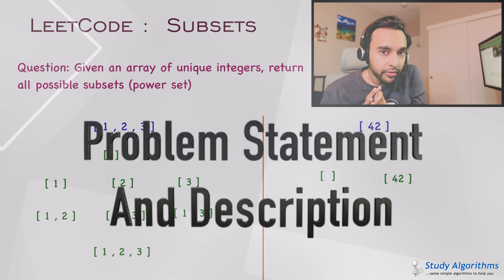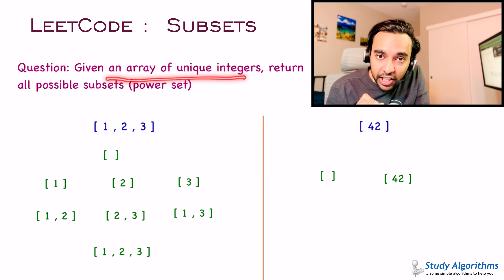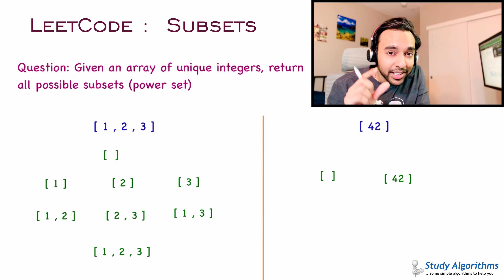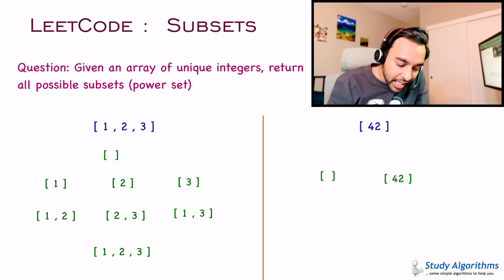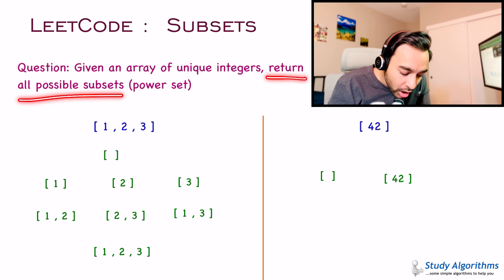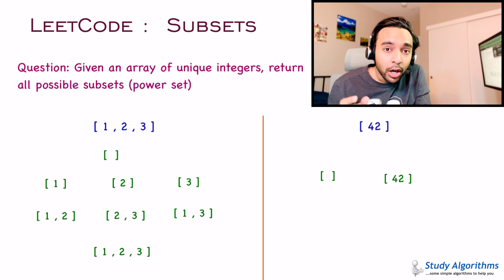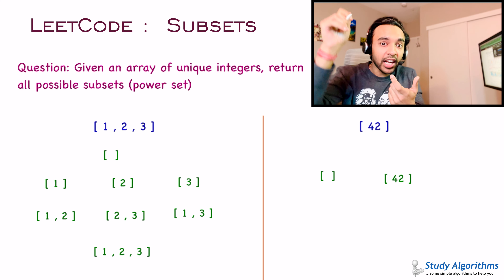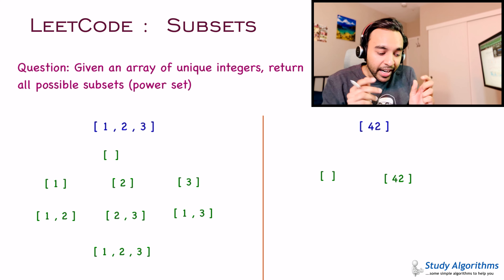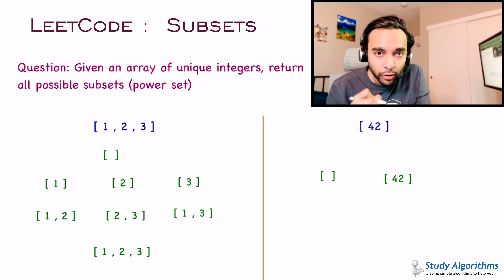Let's first make sure that we are understanding the problem statement correctly. You're given an array of unique integers. Notice the term 'unique' because these key terms can differentiate how you approach the problem. Given this array, you have to return all the possible subsets that you can form using it. A subset is nothing but a smaller set that you can derive from a larger set, and it can have one or all of the elements from the array, or you can pick any elements that you like.